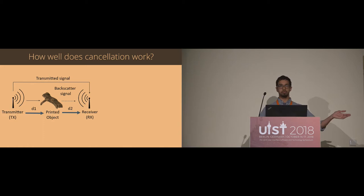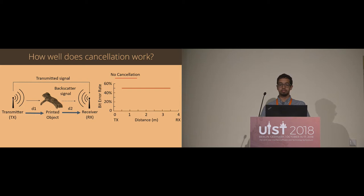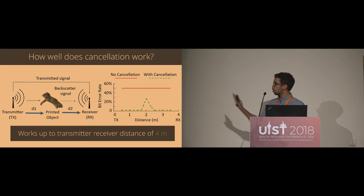So how well does this cancellation work? We test this by placing a transmitter on one side of the room and our receiver on the other side. And then we have our printed object that we move across the room in the middle. We measure performance by checking the number of bit errors that we get from our printed object. And we can see that here on this plot, when we don't have any kind of cancellation, we have a 50% error rate, which means we're just randomly guessing for each one of our bits. But as soon as we turn on our cancellation, we can see that over this four meter range that we have, it actually works pretty well with the worst performance coming in the middle where the system starts to fail.